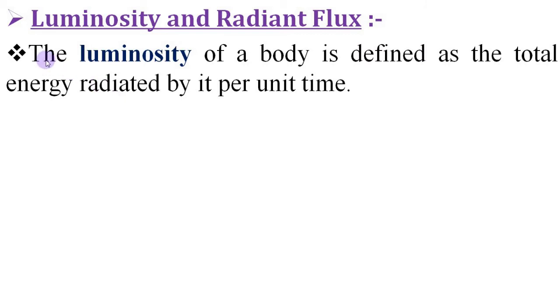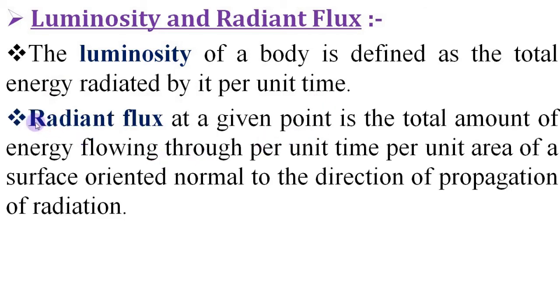The apparent magnitude and brightness of a star do not give us any idea of the total energy emitted per second by the star. This is obtained from radiant flux and luminosity of a star. The luminosity of a body is defined as the total energy radiated by it per unit time. Whereas radiant flux at a given point is the total amount of energy flowing through per unit time per unit area of a surface oriented normal to the direction of propagation of radiation.